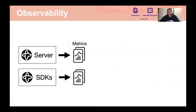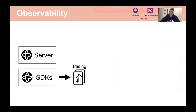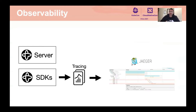Observability is very important when writing microservices or distributed services. Both the server and the Temporal SDKs provide out-of-the-box metrics that can be consumed by Prometheus and Grafana so you can build dashboards and visualizations. In addition, the Temporal SDKs provide tracing information so during execution you can view traces with tools like Jaeger or whatever tracing software you want to use.